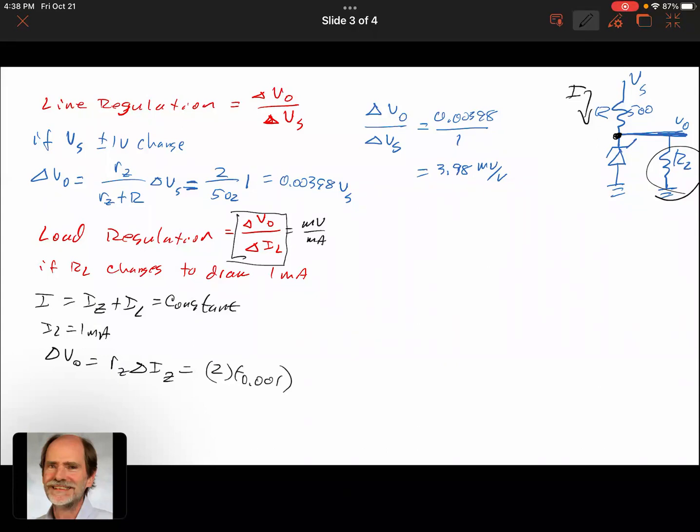Then delta Vout would be Rz times delta Iz, which would be 2 times 0.001—it's really a negative, I guess—which would be negative 0.002 volts, and we had a 1 milliamp change.